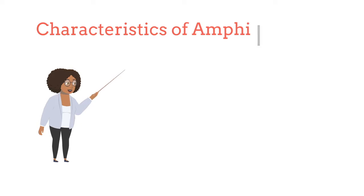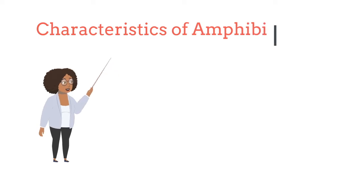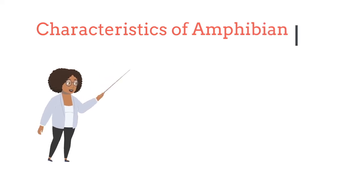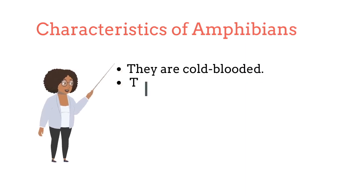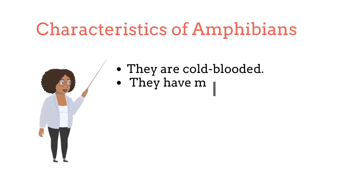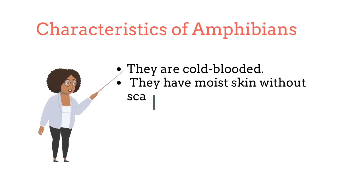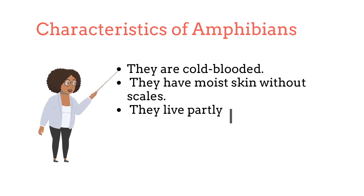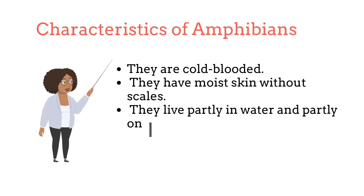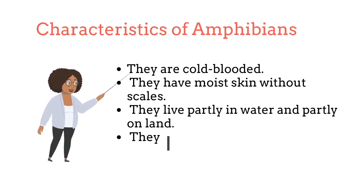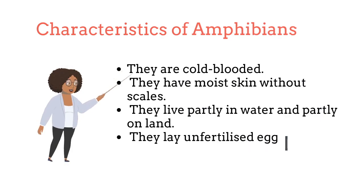The following are some characteristics of amphibians: 1. They are cold-blooded. 2. They have a moist skin without scales. 3. They live partly in water and partly on land. And 4. They lay unfertilized eggs.